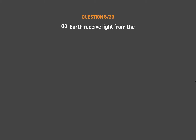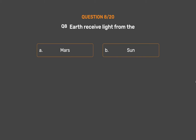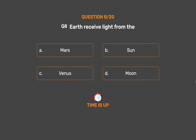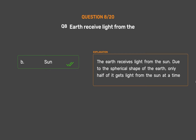Question number 8. Earth receives light from the: Option A: Mars. Option B: Sun. Option C: Venus. Option D: Moon. The correct answer is Option B: Sun. The Earth receives light from the Sun. Due to the spherical shape of the Earth, only half of it gets light from the Sun at a time.